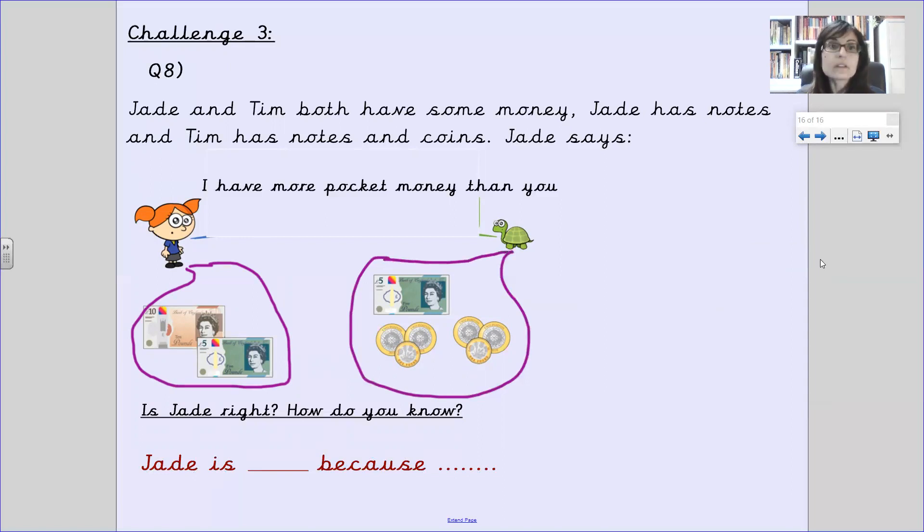So, Jade says, I have more pocket money than you. Is Jade right? How do you know? Remember, you've got to tell me and use that stem sentence at the bottom. Jade is right because and you've got to explain why. Or is Jade wrong? Then you have to say, Jade is wrong because and you've got to explain why. Remember to upload all your work onto Tapestry so we can have a look and see how you're getting on. See you next time, Gaudi.